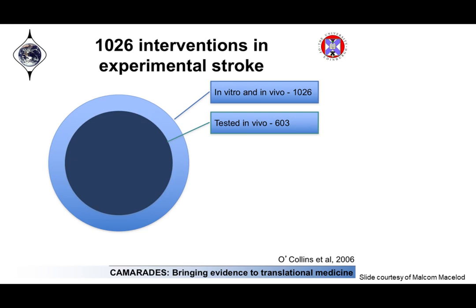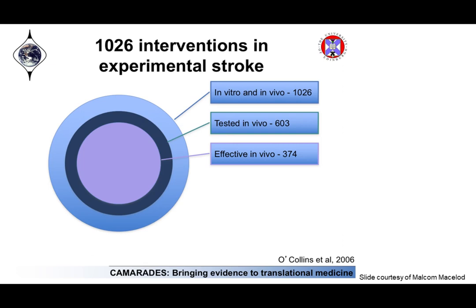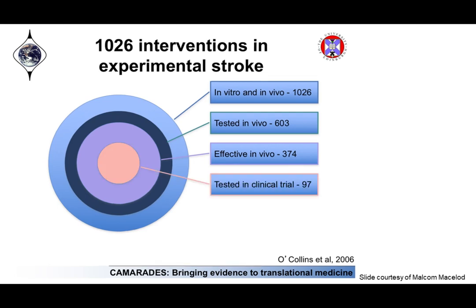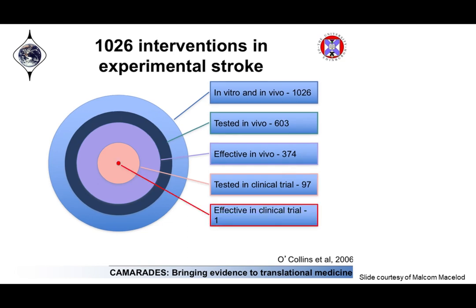600 of these were actually tested in vivo, and 374 were shown to be effective in vivo — a positive intervention for stroke happening in an animal. 97 of these interventions were then tested in people in a clinical trial, and unfortunately only one was effective over this 10-year period of study. In the same period, two other interventions did not come through this pipeline.